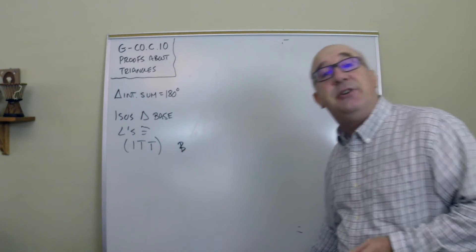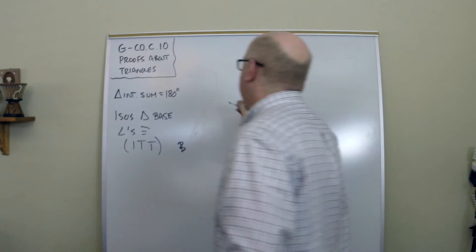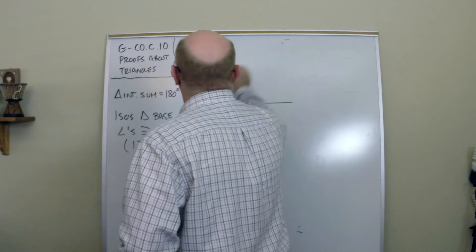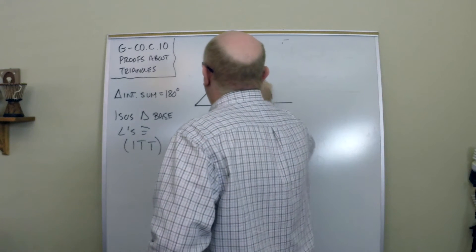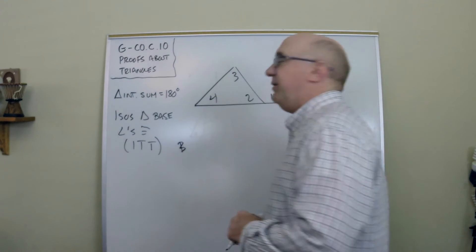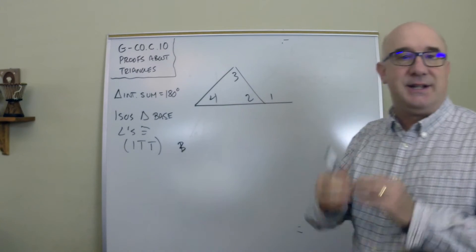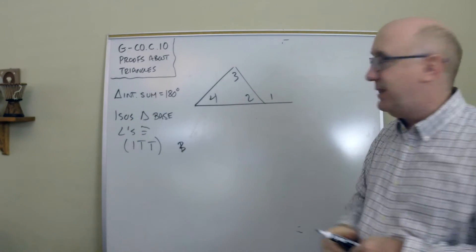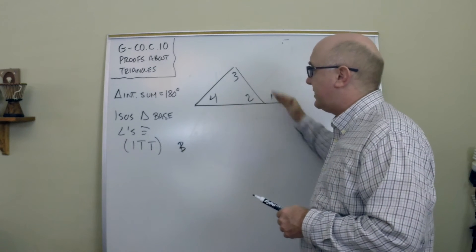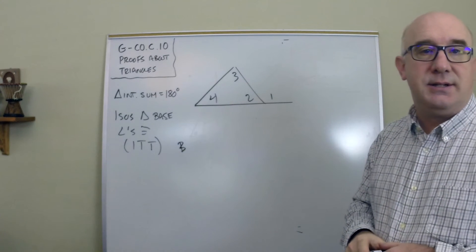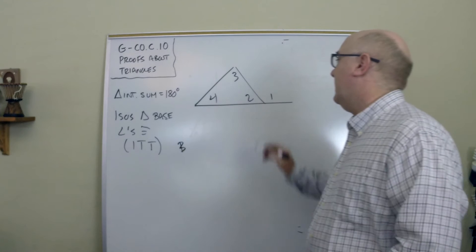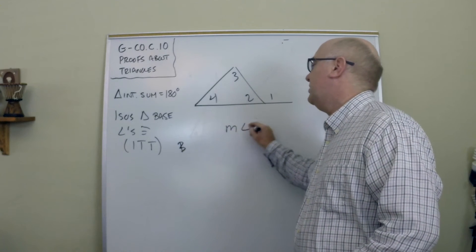And again, I'll work quickly on this. The exterior angle theorem, first of all, an exterior angle is an extension of one of the sides. It's the angle formed between the extension and its adjacent side there.